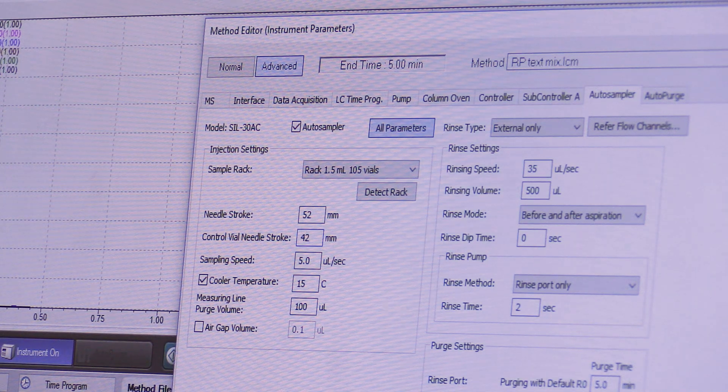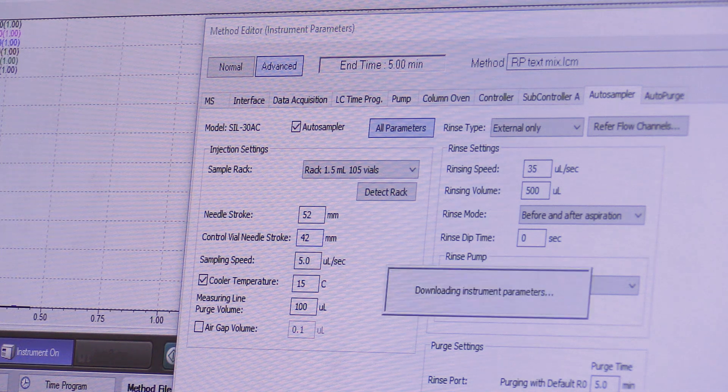Also, avoiding sample diluent mismatch can tremendously help mitigate sample crash or precipitation. Sometimes, adjusting the needle insertion depth to make sure that the injector is drawing from the supernatant of the sample can also help prevent particulates from entering the column.